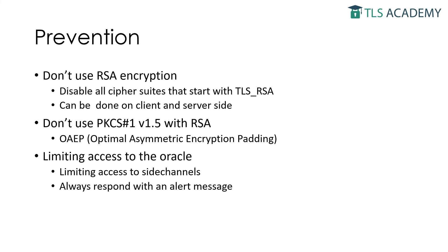One way is limiting access permissions to the side channels. Another way is to always respond with alert messages. Once the server receives the client key exchange message, it proceeds as follows: it generates a random premaster secret and attempts to decrypt the ciphertext located in the client key exchange message. If the ciphertext was valid, it proceeds with the decrypted premaster secret; otherwise, it proceeds with the random value. Since the attacker does not know the premaster secret value, the attacker is not able to compute a valid finished message. Therefore, the client finished message is always responded with an alert message, and the attacker cannot determine PKCS1 version 1.5 validity.